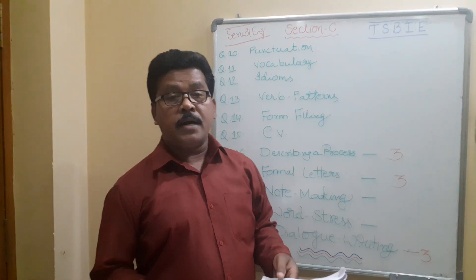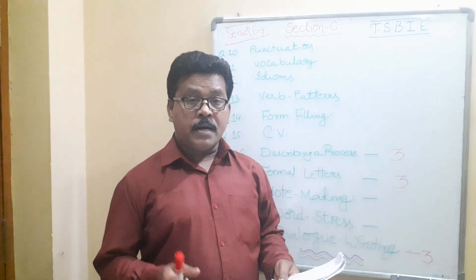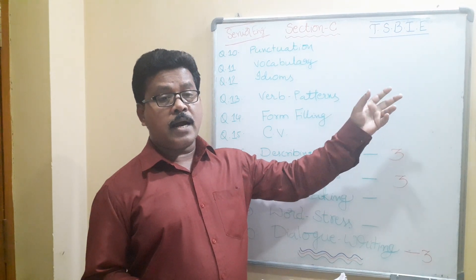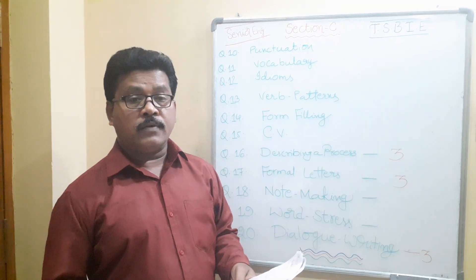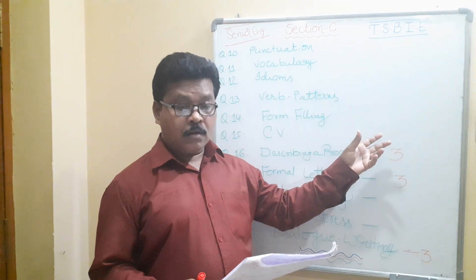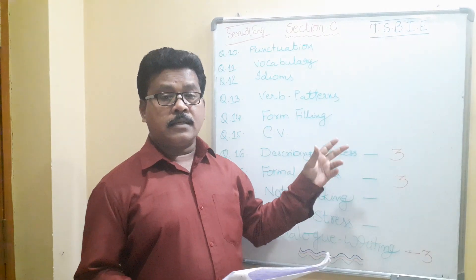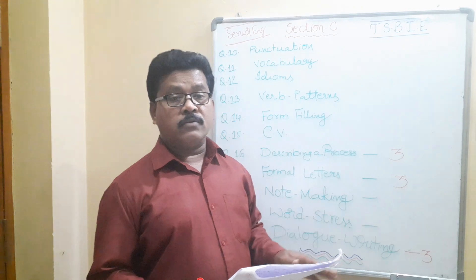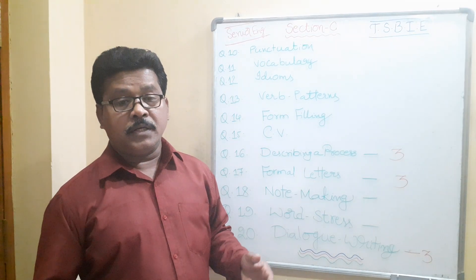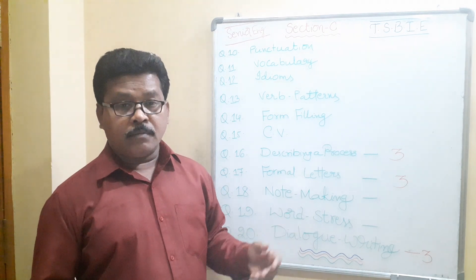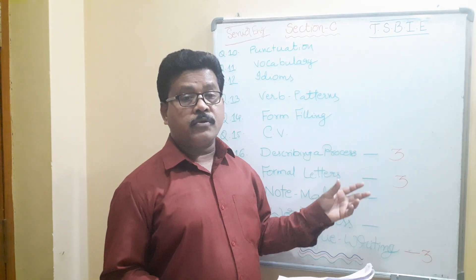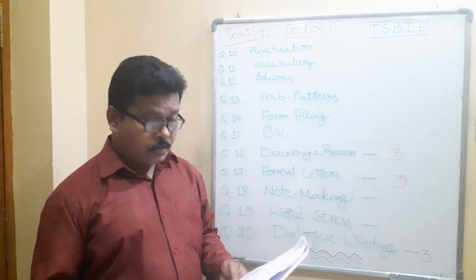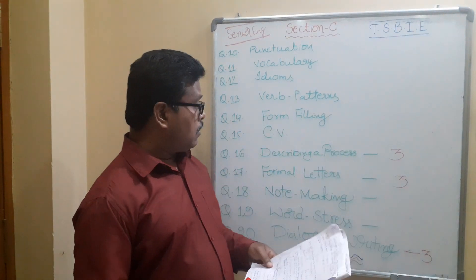Question number 13 is verb patterns. Many students are losing marks here. There are 10 patterns, but the most important ones are: subject plus have/has/had, subject complement, object complement, verb complement, transitive verb, and intransitive verb. I have made separate videos on each topic, please watch them. For this question, we have to write four sentences, and we must not repeat even a single word except 'a' and 'the' — different words must be used each time.